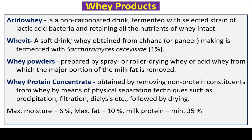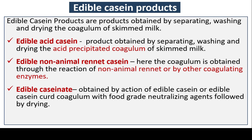Whey powders are prepared by spray or roller drying of whey or acid whey from which the major portion of milk fat is removed. Whey protein concentrate is obtained by removing non-protein constituents from whey by physical separation techniques such as precipitation, filtration, and dialysis, followed by drying. Maximum moisture content should be 6%, maximum fat 10%, and minimum milk protein 35%.